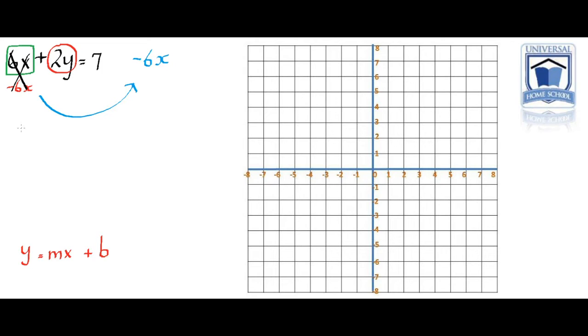Let's rewrite the equation. The 6x and take away 6x is 0, leaving 2y by itself. So it's 2y equals 7 take away 6x.